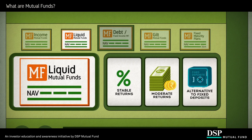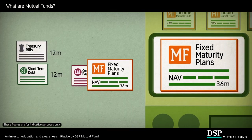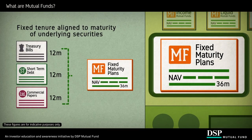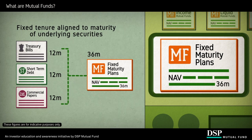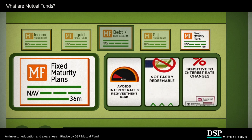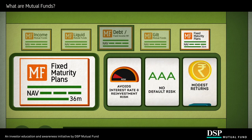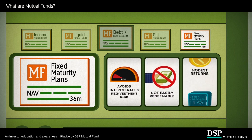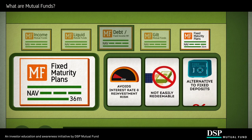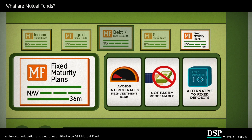Fixed maturity plans (FMPs) are close-ended debt funds with a fixed tenure aligned with the maturity dates of the securities held by the fund. This synchronized maturing takes care of interest rate risk or reinvestment risk. They require you to remain invested for a finite period and, unlike liquid funds, they are not easily redeemable. But because the returns are more stable and predictable within a range, they are also considered a great alternative to fixed deposits.